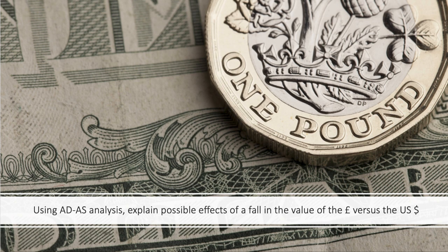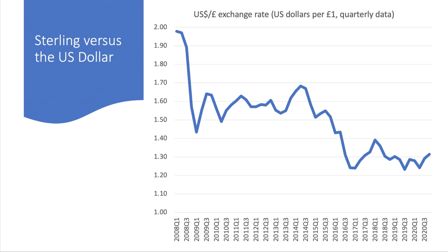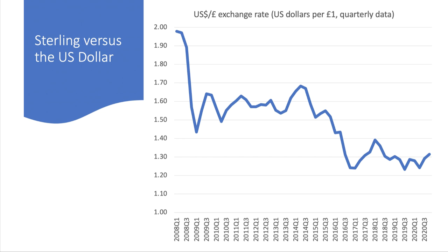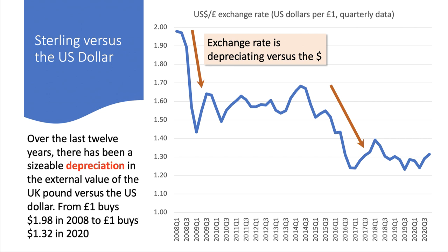Using ADAS analysis, explain the possible effects of a fall in the value of the pound against the US dollar. This data shows the quarterly value of the UK exchange rate against the dollar — how many dollars a pound will buy. Since 2008, the pound has been depreciating against the US dollar, with notable depreciations in 2016 and in 2008-2009.